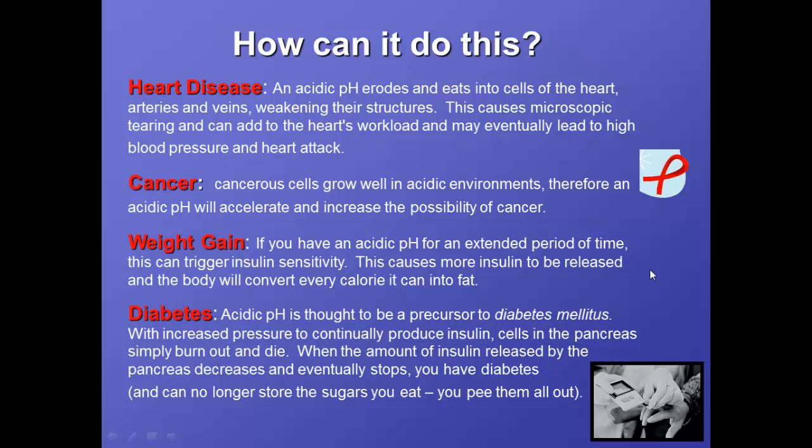So for example, heart disease. Cancer cells actually really love acidic pH environments, and so if you have an acidic pH, it'll be more likely that you will get cancer. If you have an acidic pH for a long time, another really interesting thing it does is it can trigger insulin sensitivity. Basically what that means is more insulin is released, and your body will grab onto every single calorie it can and turn it into fat. And it's no surprise then that acidic pHs are also related to diabetes.